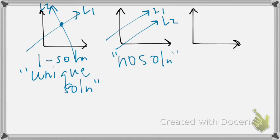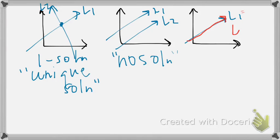Then we might have the case where L1 looks like this, and L2, if I draw that correctly, happens to overlap L1. So what do we notice? That every point on this line is a solution. And since there are infinitely many points on this line, we say that this system has infinitely many solutions.